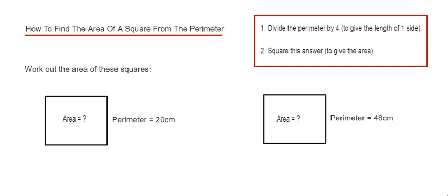We can do this in two simple steps shown in the red box. First, we divide the perimeter by 4. This will give us the length of one side of the square.